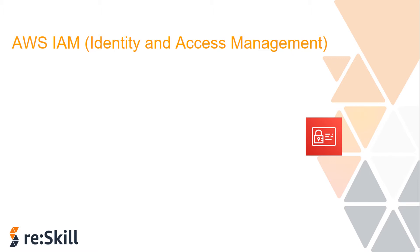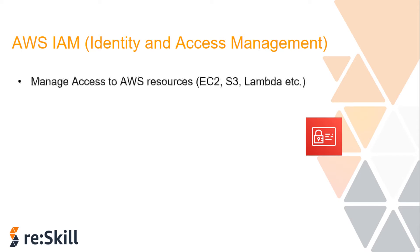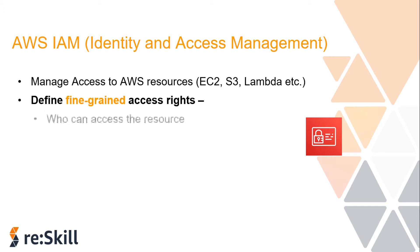AWS IAM stands for Identity and Access Management. It allows you to control access to compute, storage, databases, and application services in the AWS cloud. It handles both authentication and authorization — specifying which users can access which resources. IAM is a tool that centrally manages access to launching, configuring, managing, and terminating resources in your AWS account, including the ability to specify exactly which API calls a user is authorized to make.